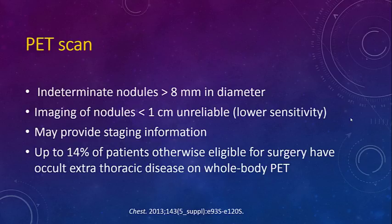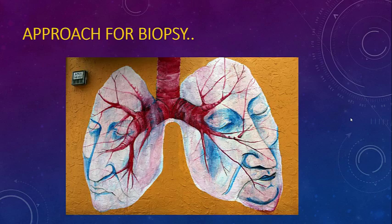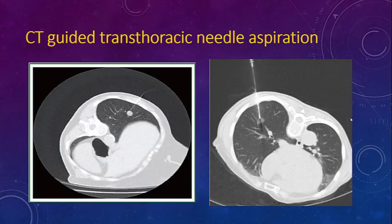PET scan is generally ordered for nodules more than 8 mm in diameter, though sensitivity is lower for lesions under 1 cm so it is best reserved for nodules greater than 1 cm. It can provide staging information but is not a standalone staging tool. Up to 14 percent of surgical candidates have extra-thoracic lesions, making PET useful for assessing metastatic disease.